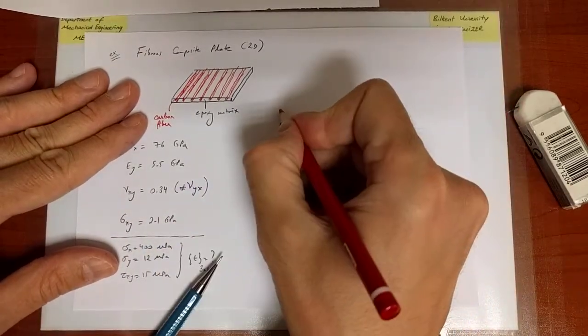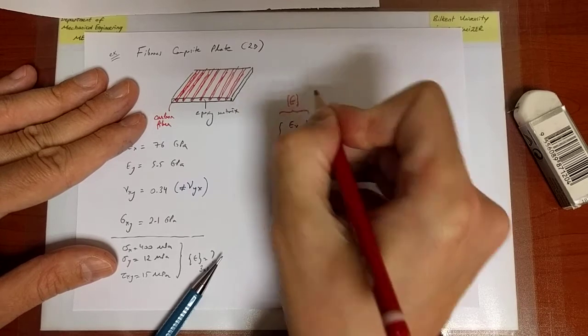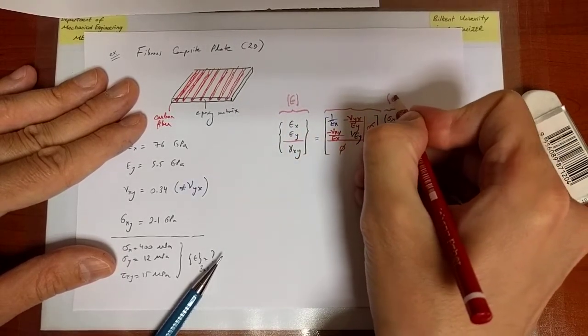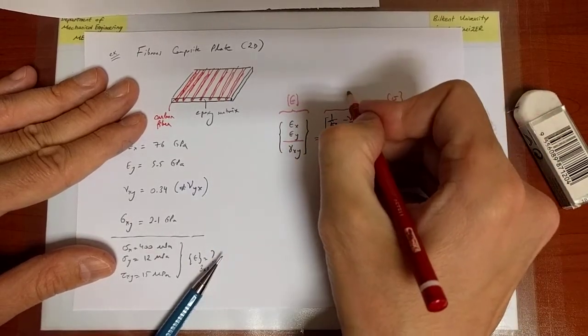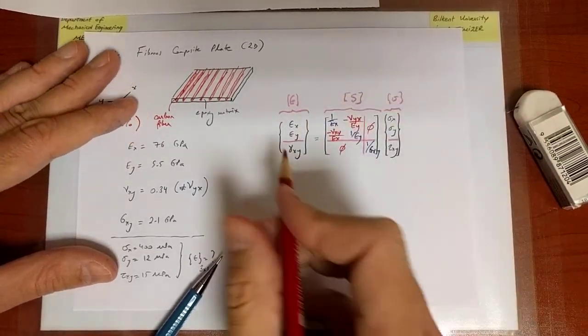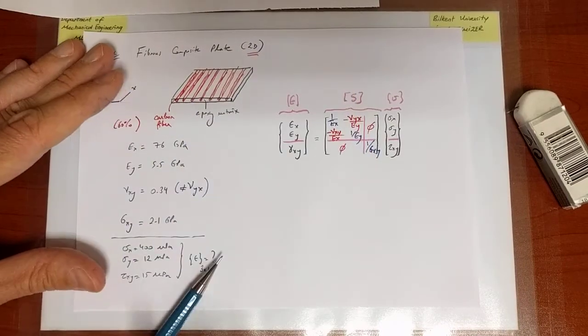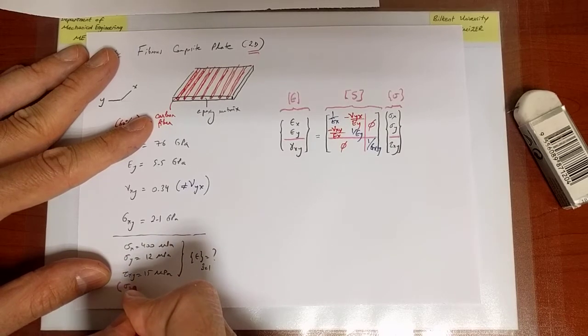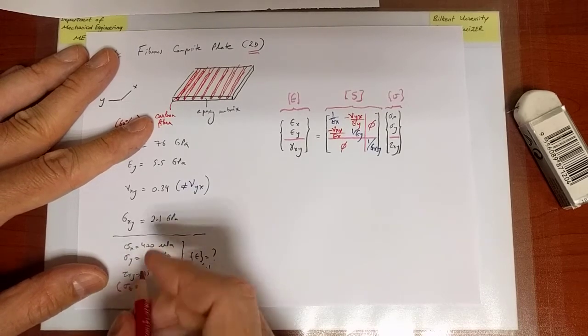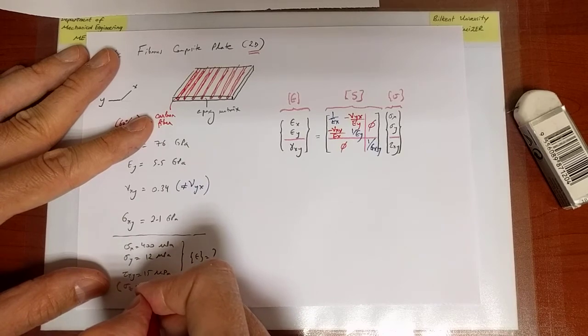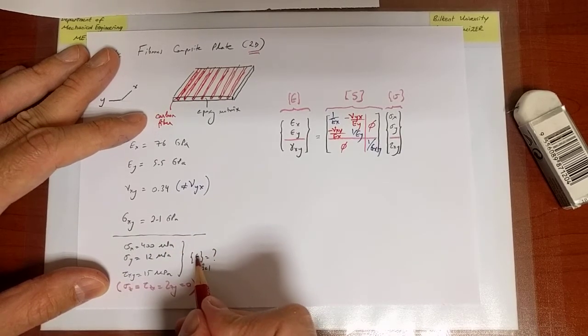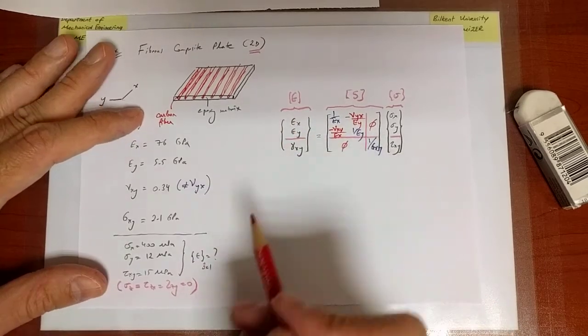This here is epsilon, which I'm trying to find out for a given state of stress indicated through sigma. And what's in between is the compliance in this two-dimensional setting. I write that sigma_z equals tau_zx equals tau_zy equals 0, and I'm only interested in the strains which arise within the xy plane.